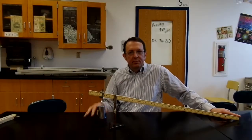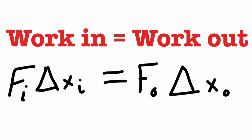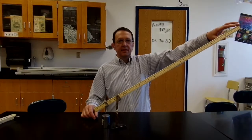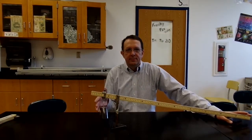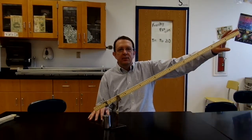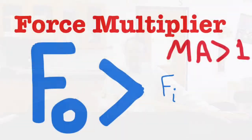The two are pretty close to the same size, input versus output work. And this, this force multiplier, which is a speed and displacement divider, has a mechanical advantage that is greater than one, like two, three, four, seven, twelve, something like that.